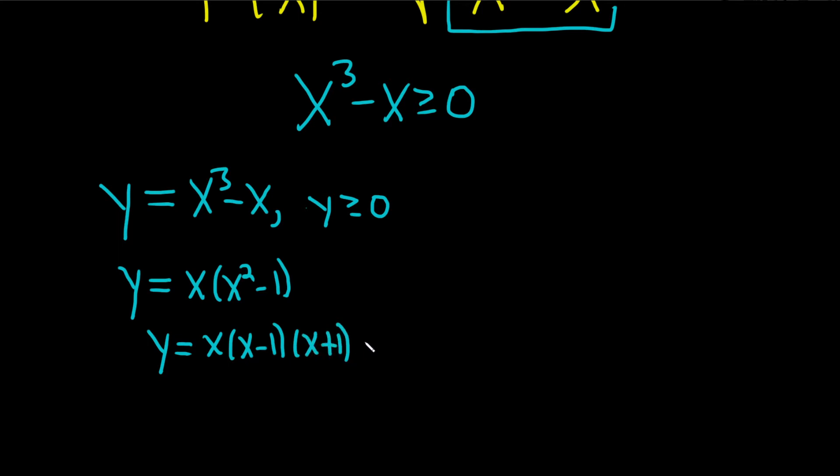And so if you were to set this equal to zero to find the intercepts, you would get zero, you would get 1, and you would get negative 1.